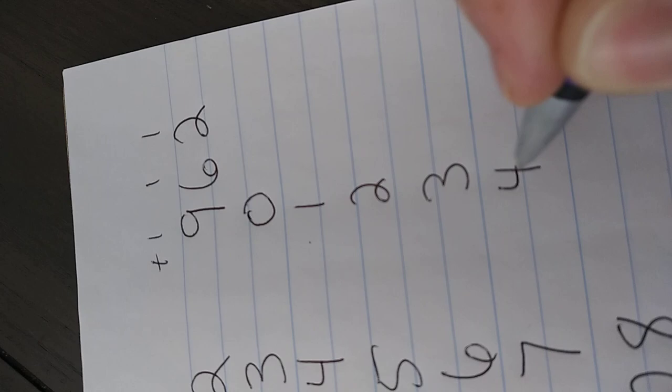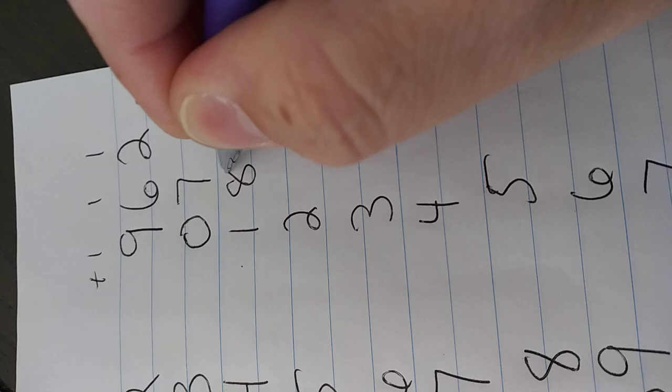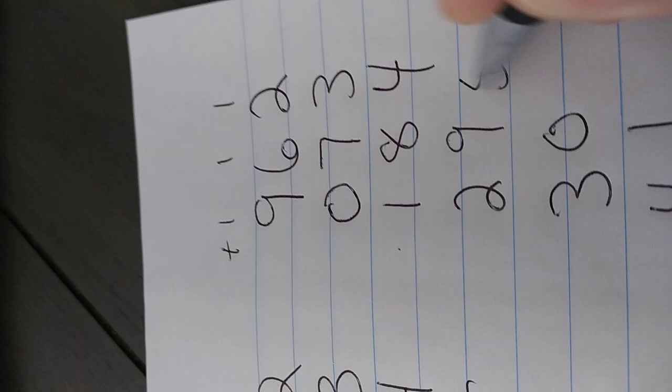Because it will repeat up here. So 6 plus 1 is 7, 8, 9, 10, 11, 12, 13, 14, 15, 16. Then 2 plus 1, 3, say hi. 3, 4, 5, 6, 7, 8, 9, 10, 11, 12. All right.